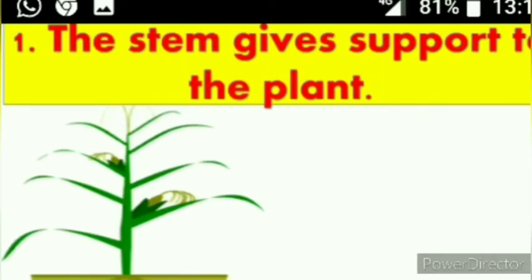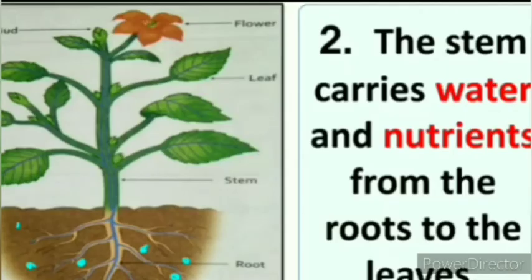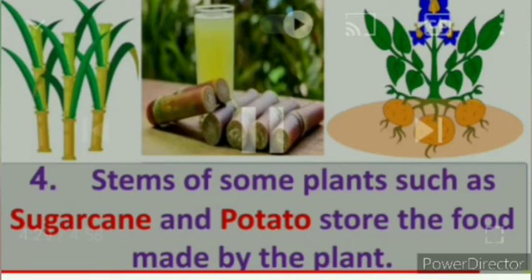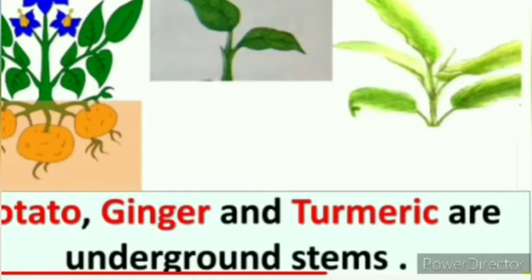Now the functions of stem. First, it firmly holds the plant erect and supports the branches. Second, it carries water and minerals from roots to different parts of the plant. Third, it carries prepared food from leaves to different parts of the plant — the food is prepared in the leaf and the stem transports it. Fourth, in some plants the stem also stores food and is used as food — for example, potato, sugarcane, and ginger, which are underground stems.